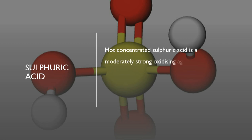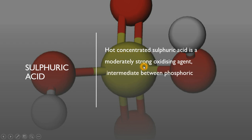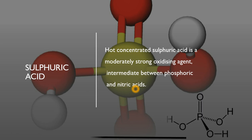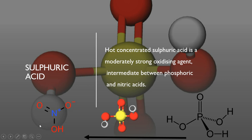Hot concentrated Sulphuric acid is a moderately strong oxidizing agent — intermediate between Phosphoric acid and Nitric acid. Nitric acid is most oxidizing, after that sulphuric acid, followed by phosphoric acid H3PO4.